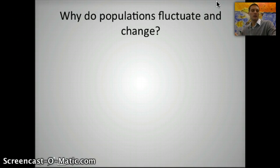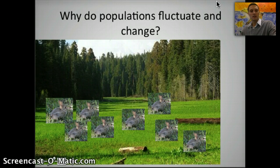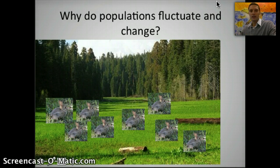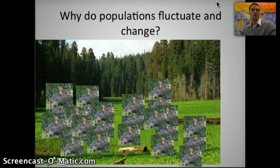Imagine a situation where we've got a well-stocked meadow with nothing really living there, and then along come a population of young rabbits. They enter this meadow, and after familiarizing themselves with the area and new territory, they start to establish burrows and reproduce — and they reproduce lots. This is possible because they have unrestricted access to resources: plenty of food, space, water, mates, and burrows — everything they need to survive. And because of that, they continue and continue to reproduce.